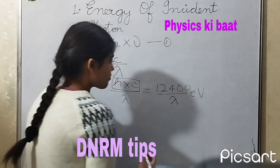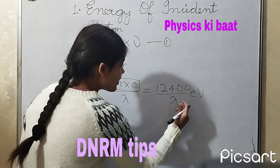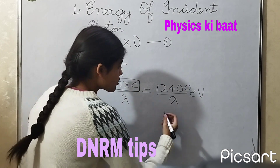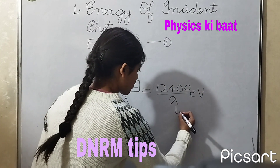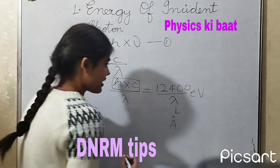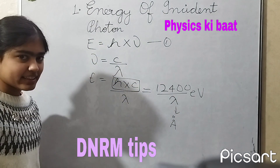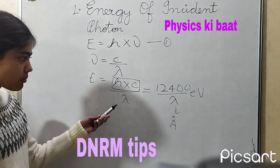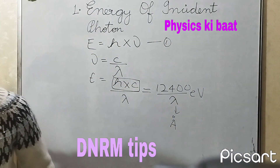The catch here is that the value of the wavelength should be in Angstroms. Hence, you can easily save time in competitive exams by using this trick.